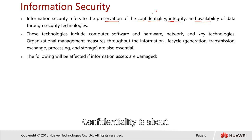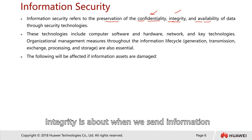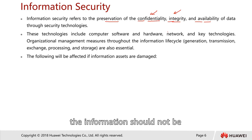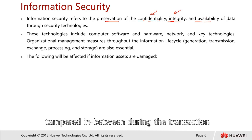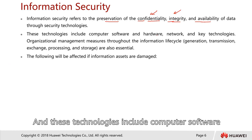Confidentiality is about information which is private and secret. Integrity means that when we send information to another party, it should not be tampered with during transmission. Availability is about who can access the information and at what time. These technologies include computer software and hardware, networks, and key technologies throughout the information life cycle.